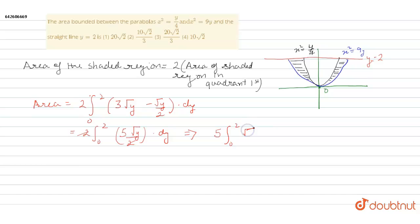0 to 2 root y dy. Now we know that the integration of root y is y to the power 3 by 2 upon 3 by 2 from 0 to 2. It will come as 5 into 2 by 3...